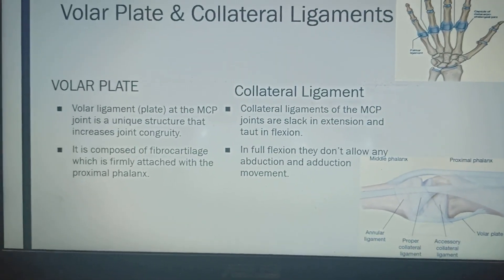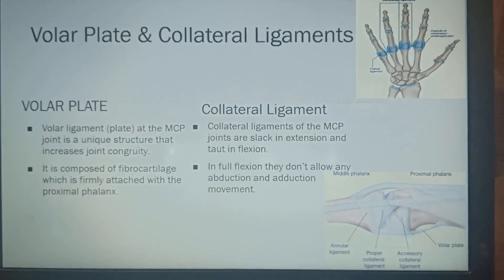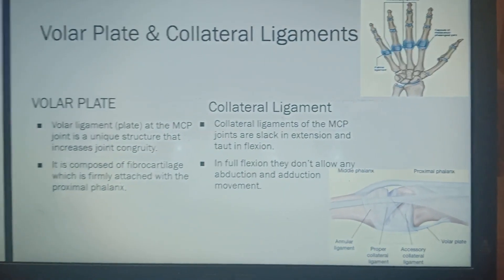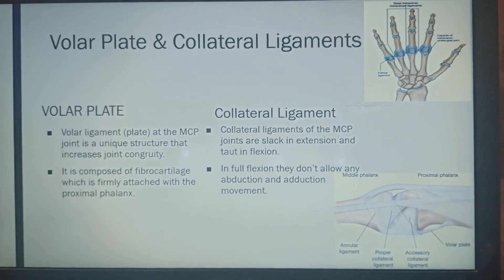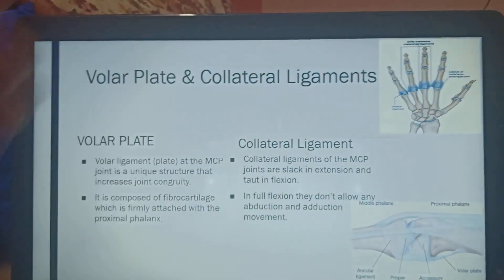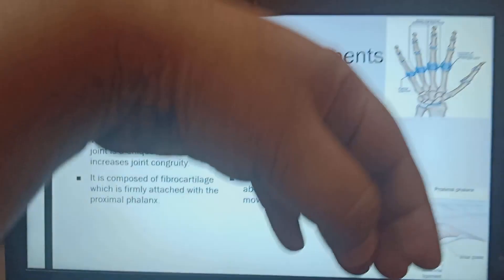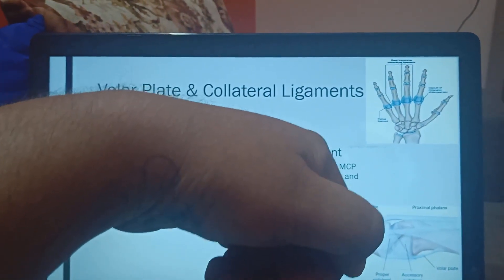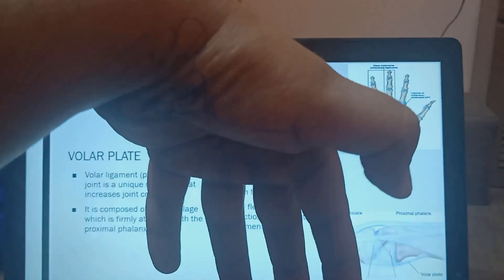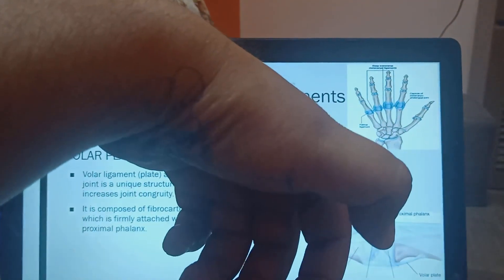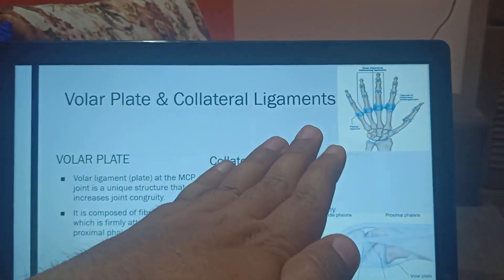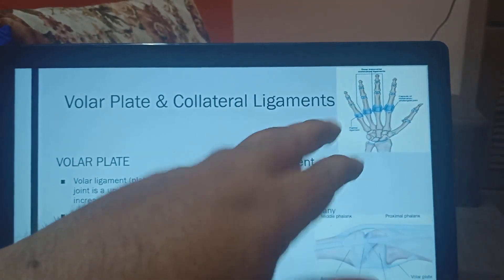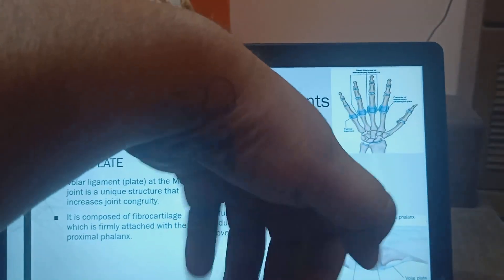Now the collateral ligaments. Collateral ligaments of the MCP joints are slack in extension and taut in flexion. That means whenever you are doing this movement, you are not able to abduct when it is in full flexion. But when it is in full extension the MCP you can do abduction. But when it is in flexion you cannot abduct.